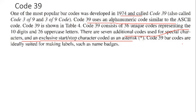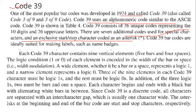Code 39 barcodes are ideally suited for making labels such as name badges. Code 39 characters contain nine vertical elements — five bars and four spaces. The logic condition, one or zero, of each element is encoded in the width of the bar — this is called width modulation.